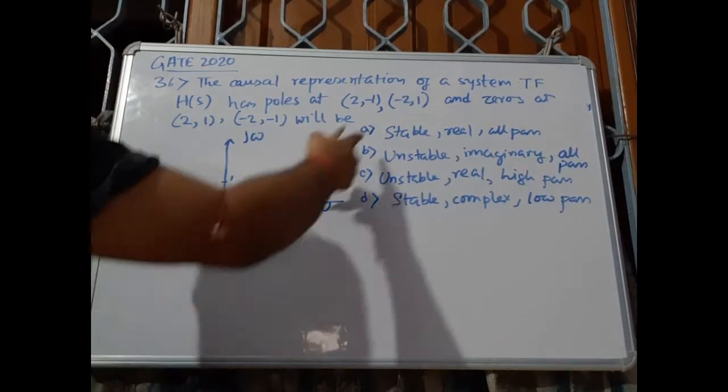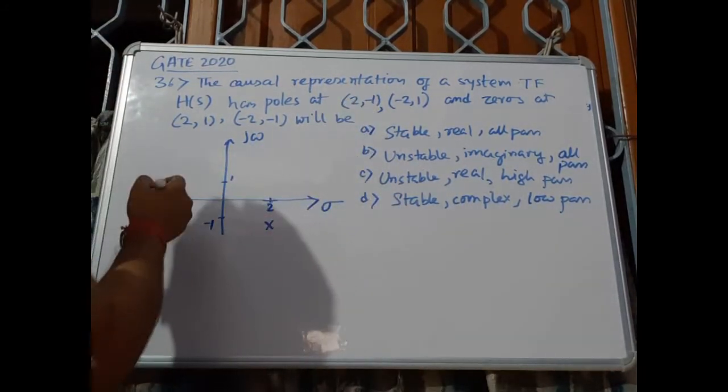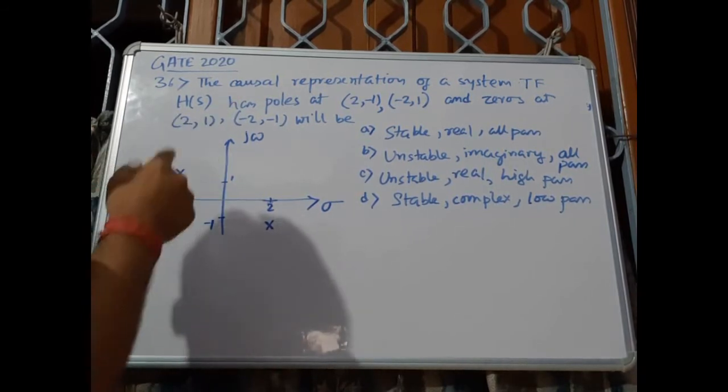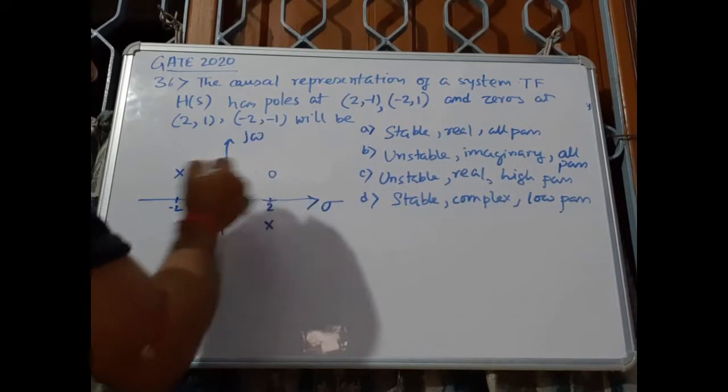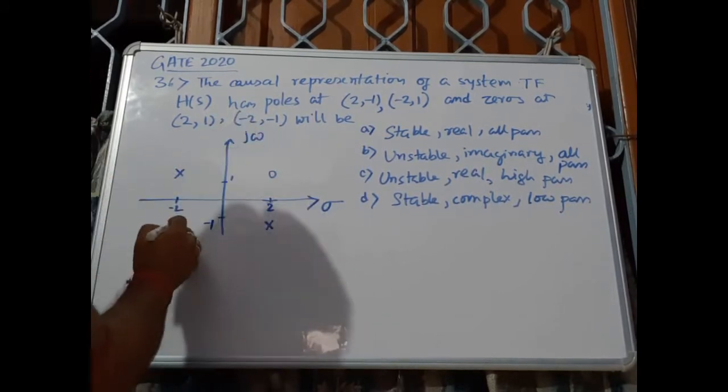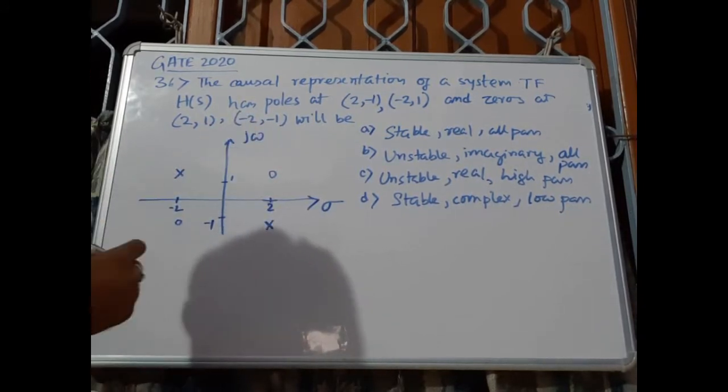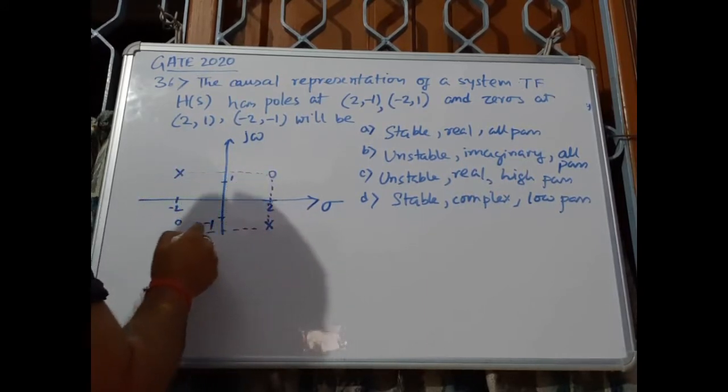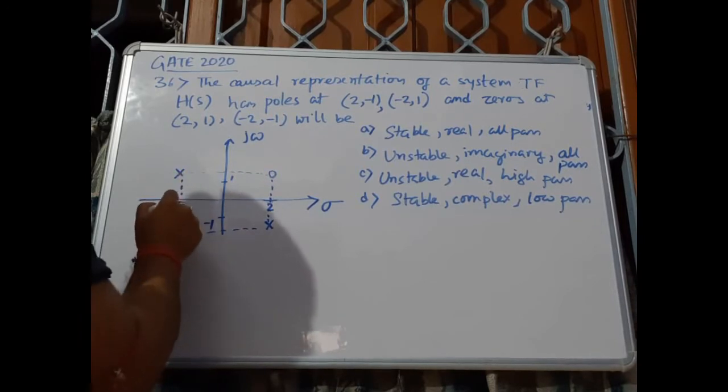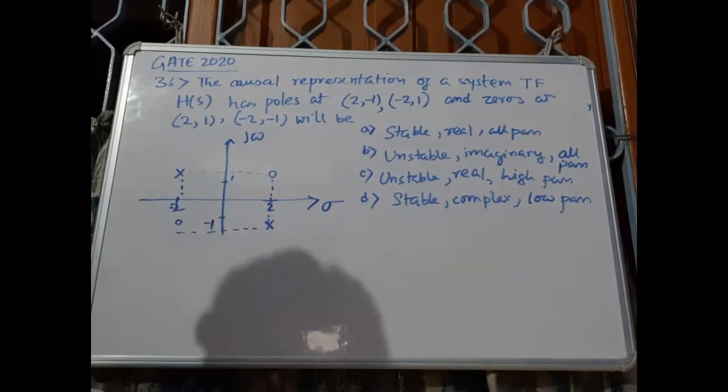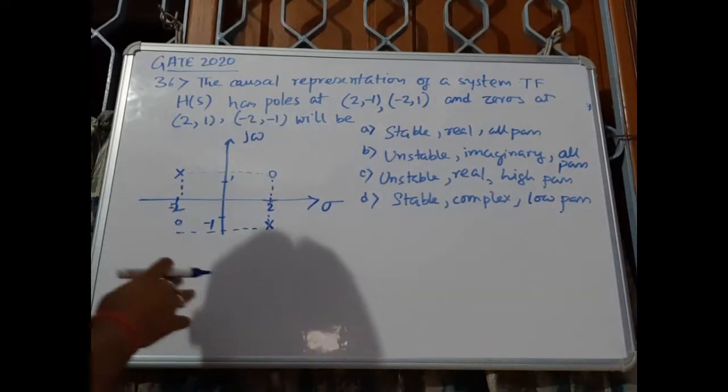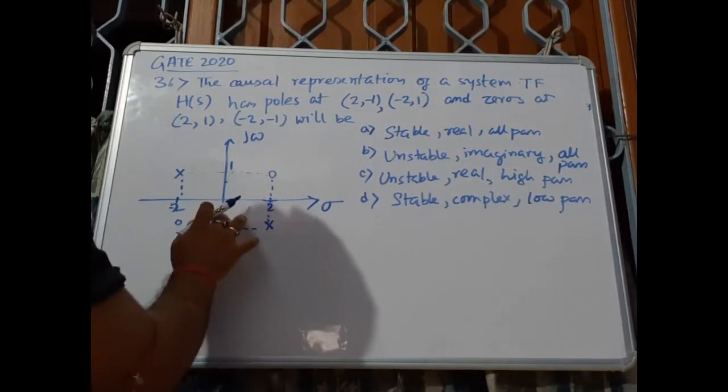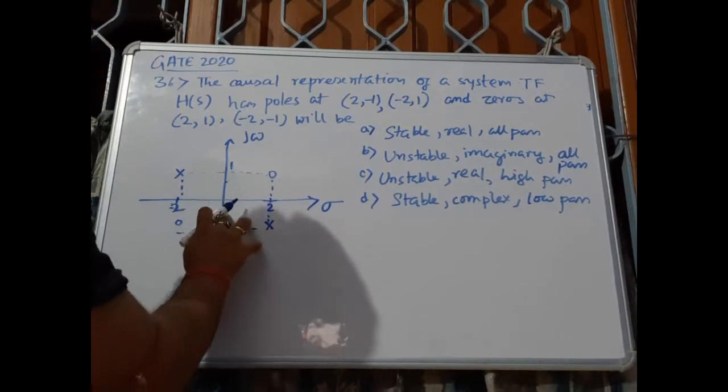Now, 2+j, so here there is a pole. And -2+j, here there is another pole. We have zeros: at 2+j here there is a zero, and at -2-j there is a zero here. This is the poles and zeros of the transfer function given. This is -2.